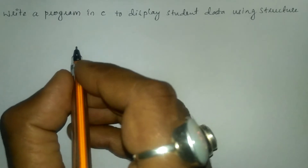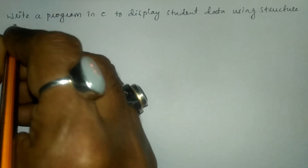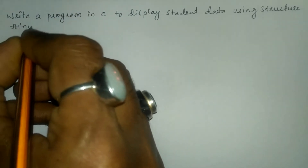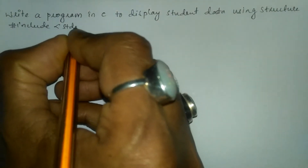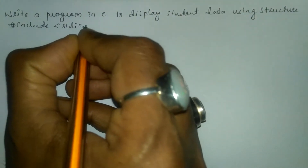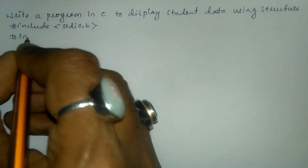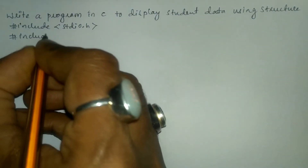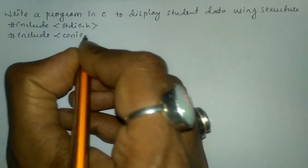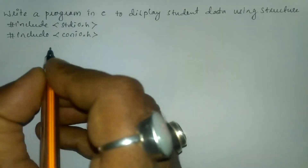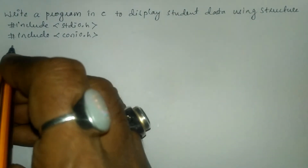Let us write the preprocessor directives: #include in angular brackets we will write standard input output dot h header file. The next preprocessor directive is #include in angular brackets we will write conio.h, that is console input output dot h header file.